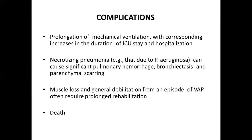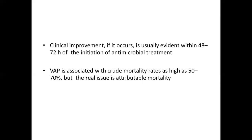Complications of ventilator-associated pneumonia include prolongation of mechanical ventilation, increasing ICU stay and hospitalization. There can be development of necrotizing pneumonia, especially due to Pseudomonas aeruginosa, causing significant pulmonary hemorrhage, bronchitis, and parenchymal scarring. The patient may develop severe muscle loss and general debilitation requiring prolonged rehabilitation, and all this can lead to early death. Clinical improvement is usually evident within 48 to 72 hours of initiating antimicrobial treatment. VAP is associated with a high mortality rate as high as 50 to 70%.